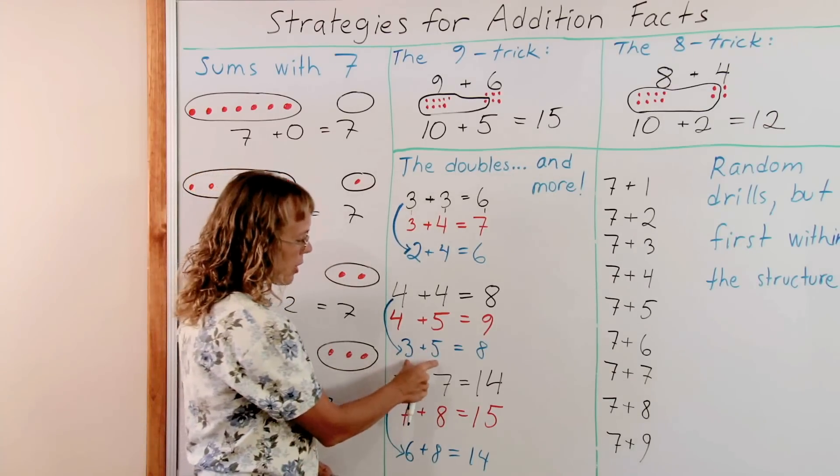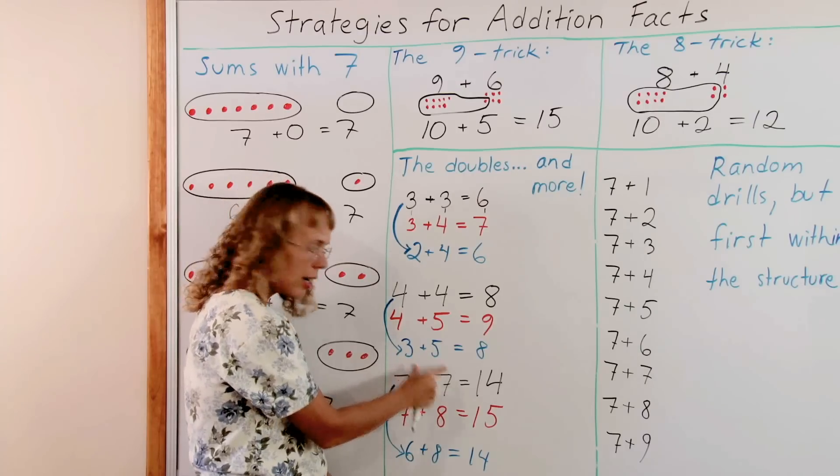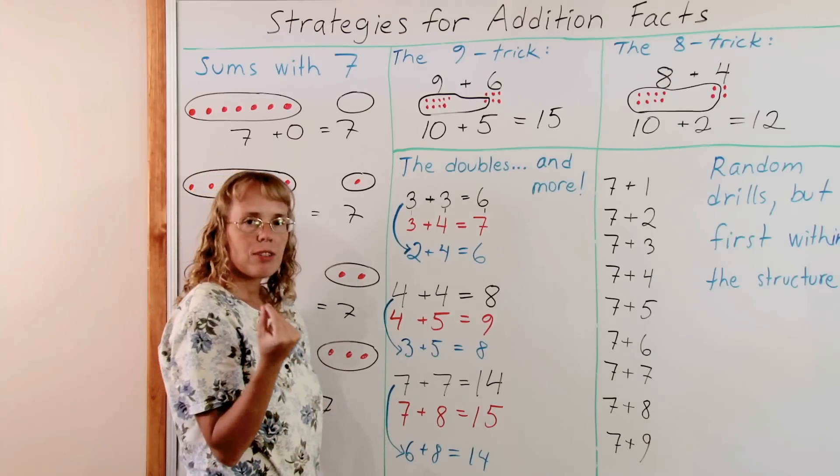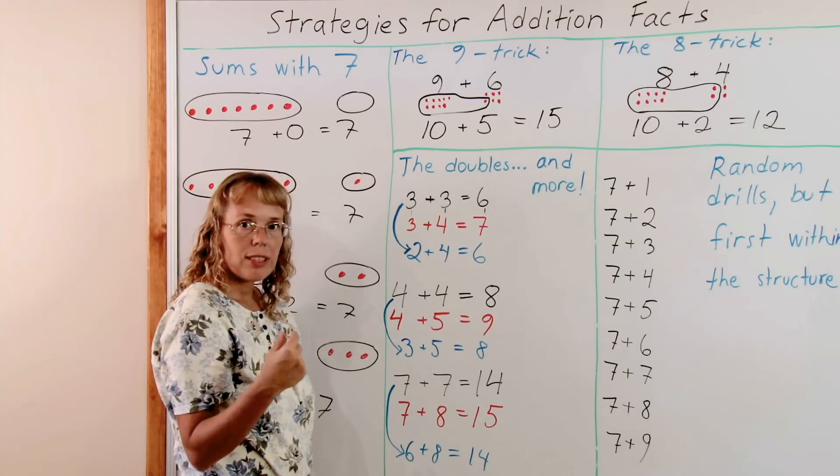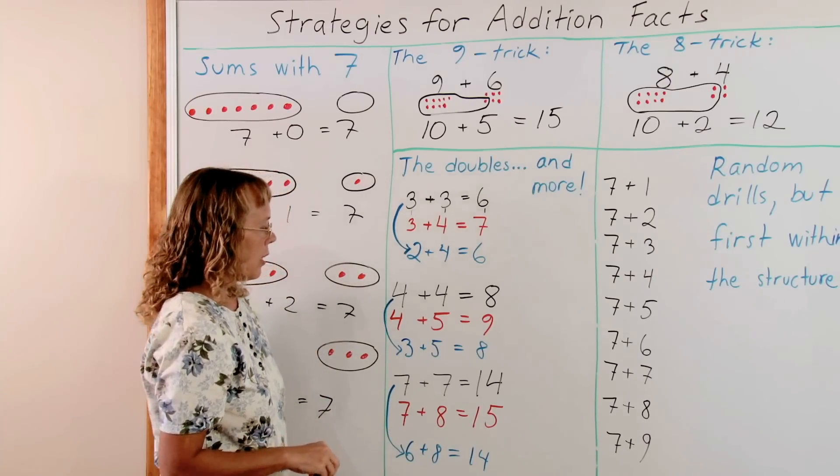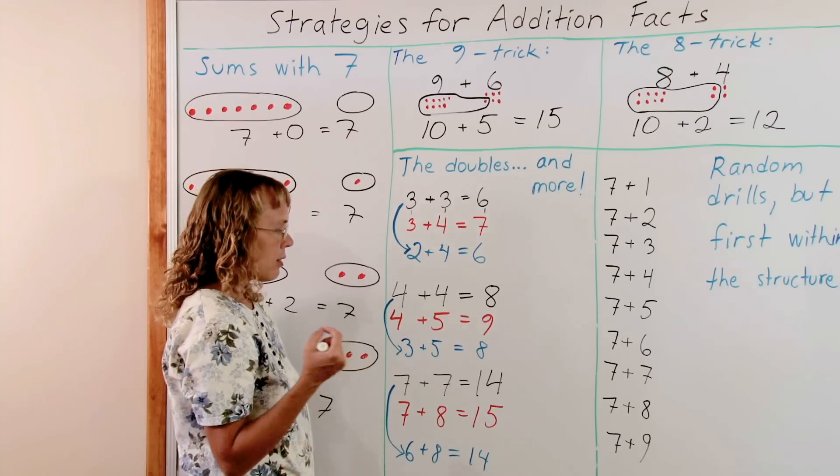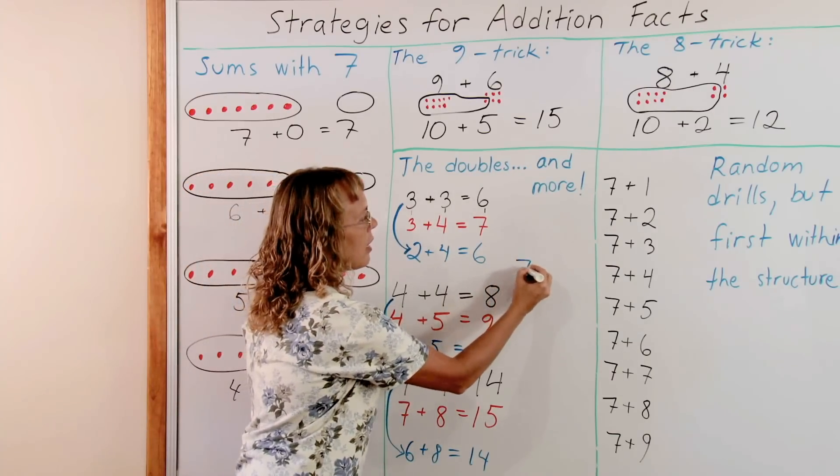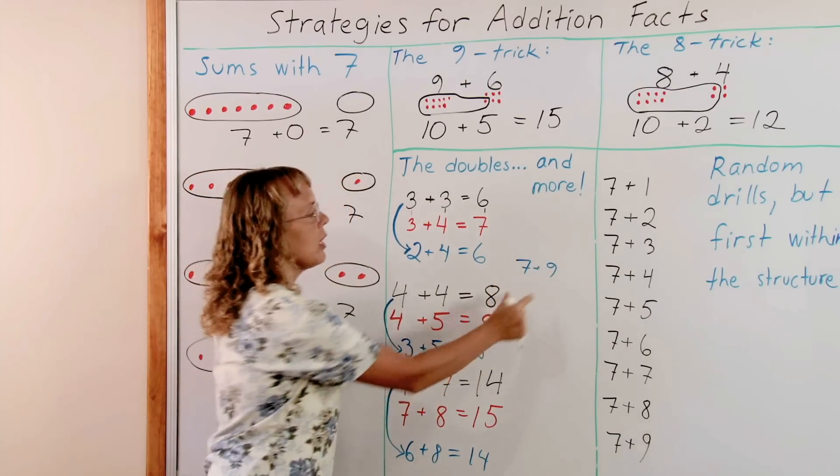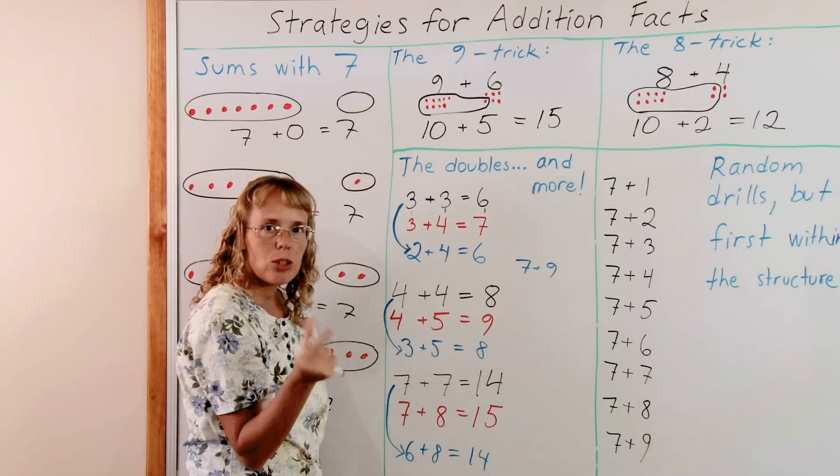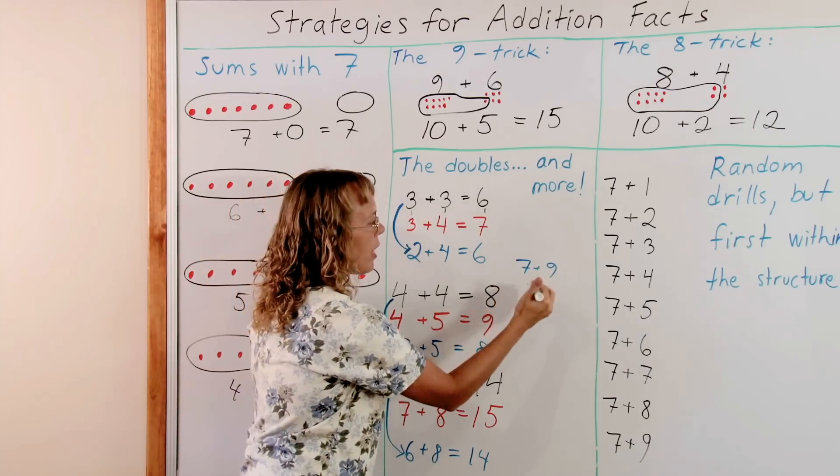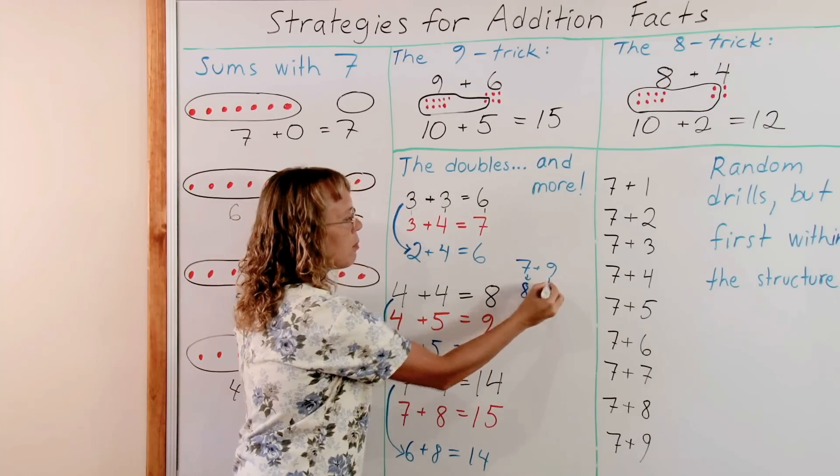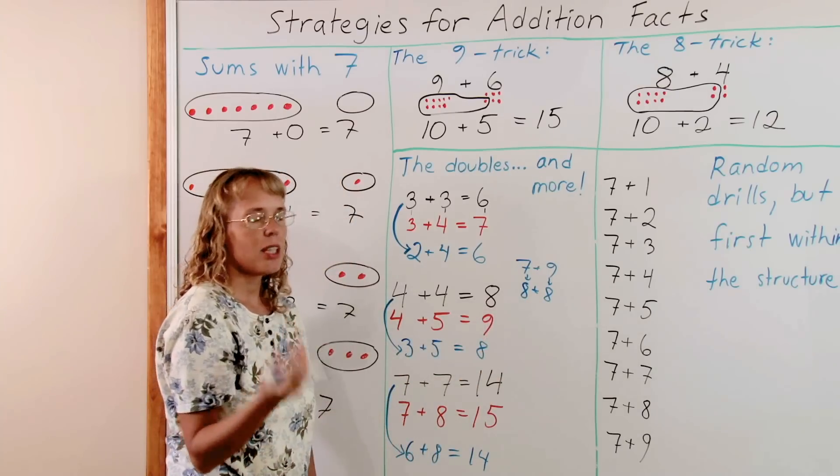And you can also notice that these 3 numbers, 3 and 5, or 6 and 8, or 2 and 4, they always differ by 2. The difference is just 2. So you can use that to recognize such facts. For example, 7 plus 9 is another one such. Because 7 and 9 differ just by 2. So you could switch this fact to become one of the doubles fact. It becomes 8 plus 8, or has the same sum. 16.